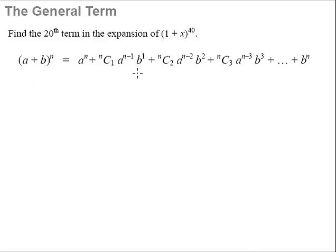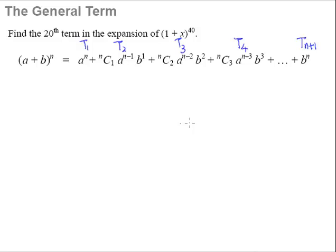This is our typical binomial theorem — the formula that we have been talking about. Looking at the binomial theorem, we can actually spot some patterns. This is the first term, T1. This is the second term, T2. This is the third term, T3. And this is the fourth term, T4. Of course, the last term is the n plus 1 term, because this is power n, so when fully expanded there should be n plus 1 terms.